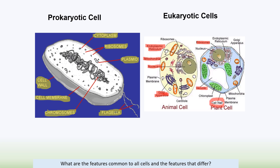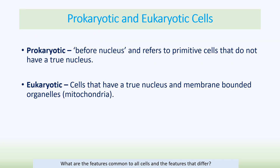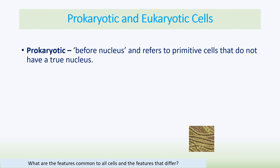'Prokaryotic' means 'before nucleus' and refers to primitive cells that do not have a true nucleus. 'Eukaryotic' refers to cells that have a true nucleus and membrane-bound organelles such as mitochondria.